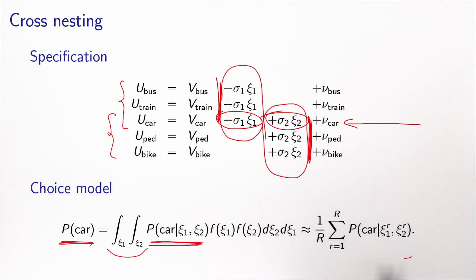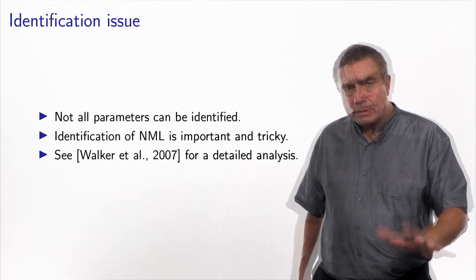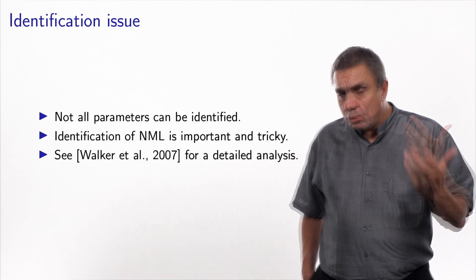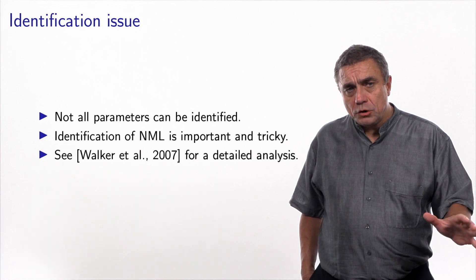The probability calculation is again approximated by Monte Carlo integration over xi1 and xi2. Identification issues are the same as for nested logit — not all parameters can be identified — and I refer you to the literature for a detailed analysis. In this video, we have seen that mixtures of logits can be used to relax the assumption of independence among error terms of different alternatives. Although it is a different model, it achieves the same objectives as the nested logit and the cross-nested logit models. Identification issues are complex and have not been fully covered here.